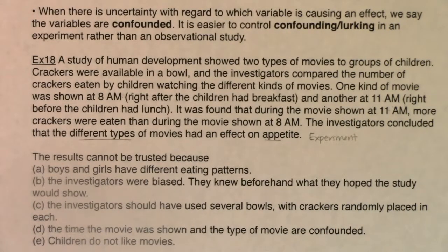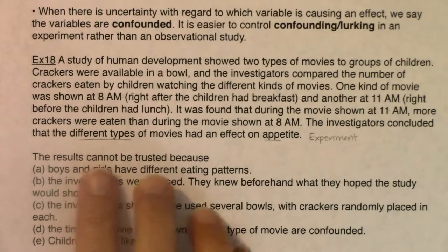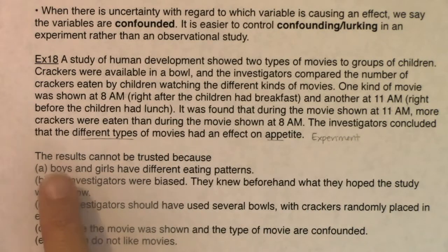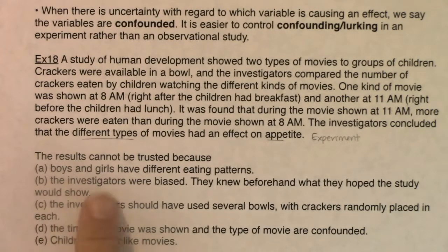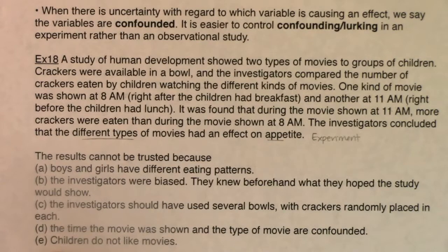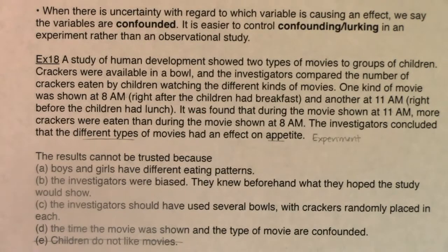Let's go through options A through E to find the main problem with how this experiment is designed. The results cannot be trusted because: A) boys and girls have different eating patterns; B) the investigators were biased and knew beforehand what they hoped the study would show; C) the investigators should have used several bowls with crackers randomly placed; D) the time the movie was shown and the type of movie are confounded; or E) children do not like movies. The most ridiculous answer is E — children definitely do like movies.